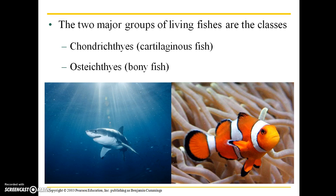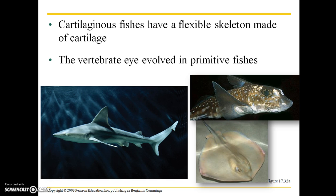The two major groups of living fishes are the class Chondrichthyes, which contains all of the cartilaginous fishes such as sharks, skates, and rays, and then the Osteichthyes, which are the bony fish. Cartilaginous fishes have a flexible skeleton made up of cartilage, and the vertebrate eye originally evolved in primitive fishes.